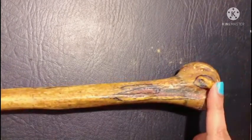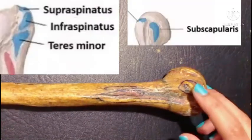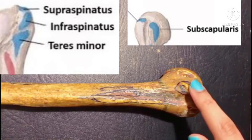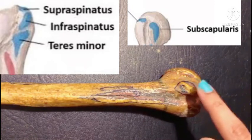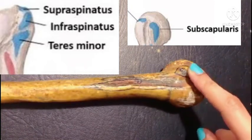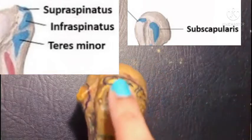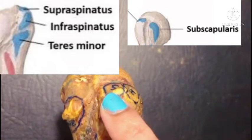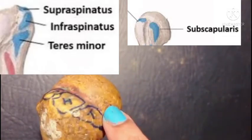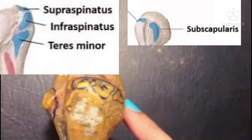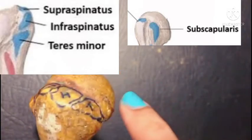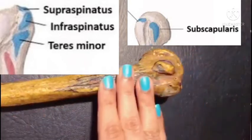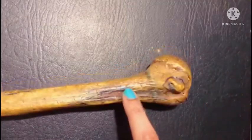From above downwards, let's talk about S first: on the lesser tubercle of the humerus we have the insertion of S, the subscapularis muscle. SIT stands for the three impressions on the greater tubercle of the upper end of the humerus bone — the upper, middle, and lower impressions — consisting of the supraspinatus, infraspinatus, and teres minor.